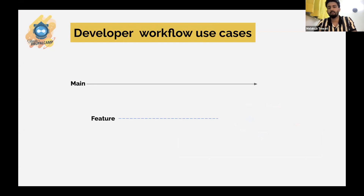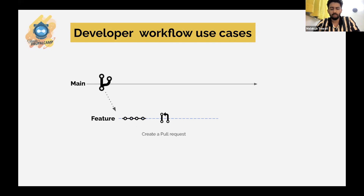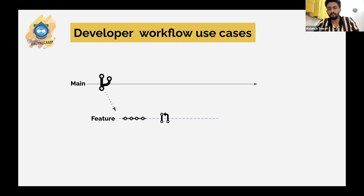Let's take a classic example of how any project works. You have a main or master branch where the production site runs. From the master branch you create a feature branch and start working on it. There will be a couple of commits. Once it is ready for review, you open a PR or pull request to merge changes back to master. Based on reviews and discussions there may be more commits, and once everything looks fine, the code gets merged to the master branch.